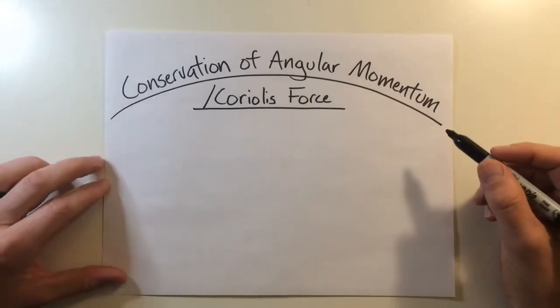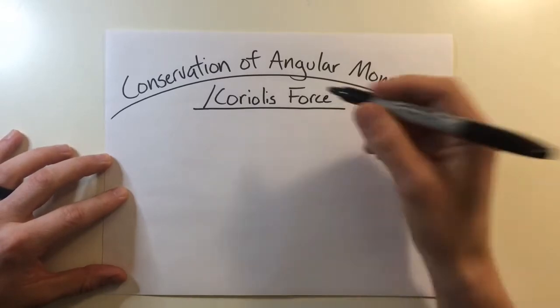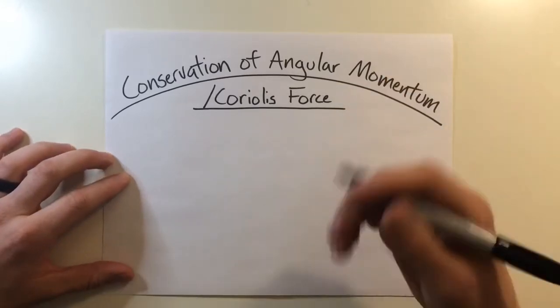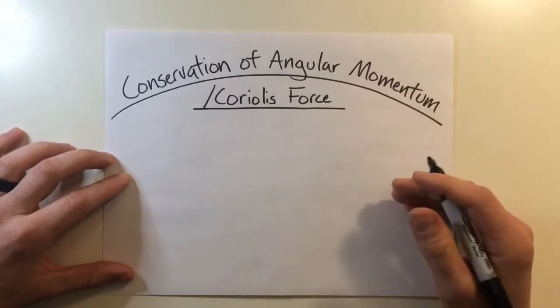In a nutshell, conservation of angular momentum is used to explain the Coriolis effect, but for the purposes of the helicopter and this lesson, they'll just be used interchangeably. So how does all this physics stuff apply to me flying a helicopter? Well, I'm glad you asked.